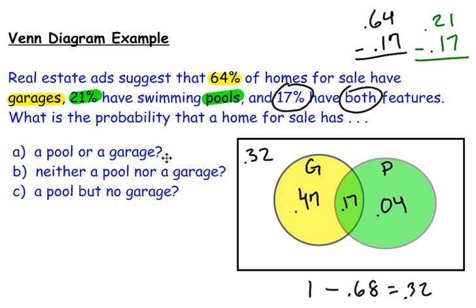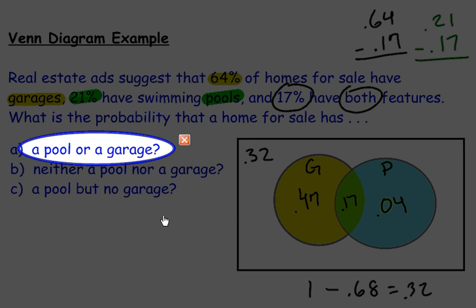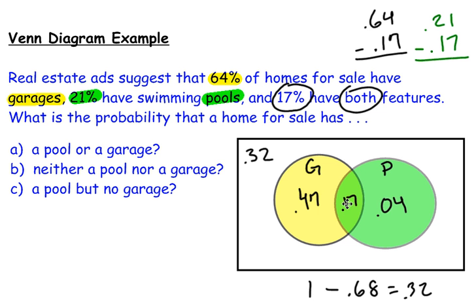Now I'm ready to answer the questions using the completed Venn diagram. The first question: what's the probability that a house has a pool or a garage? The word 'or' means I add everything inside both circles together — 0.47 plus 0.17 plus 0.04 equals 0.68. So 68% of homes for sale have a pool or a garage.